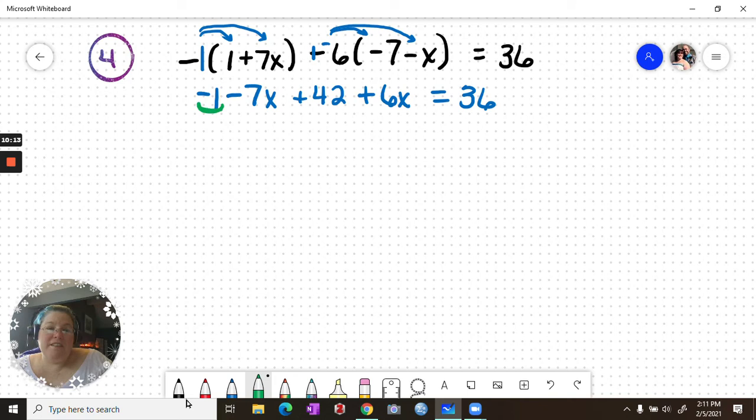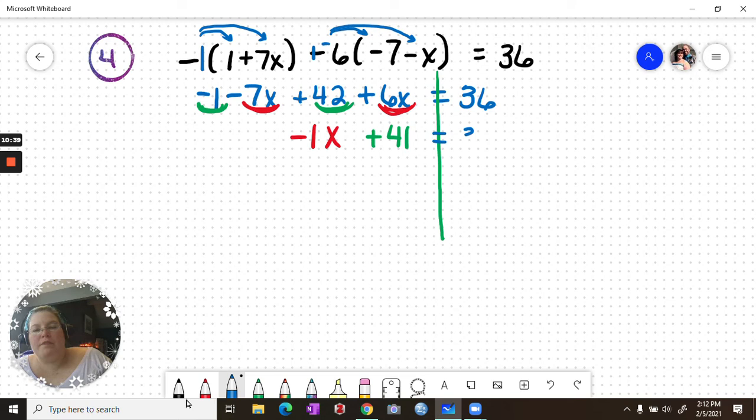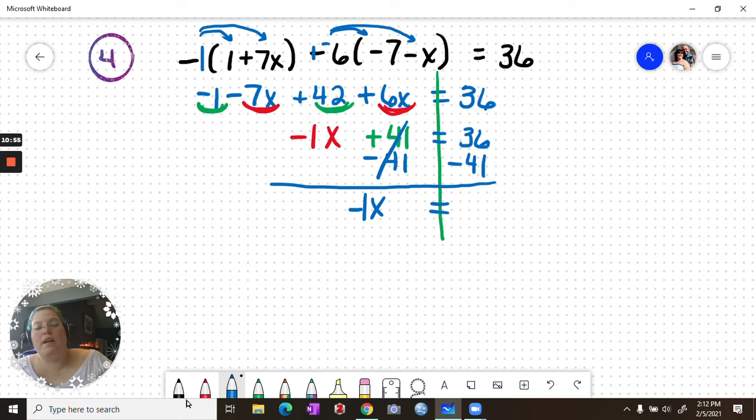Now we have some like terms. I have negative 1 and 42 on the left that I can combine, and that adds to 41. I have 6x and negative 7x, which gives me negative 1x equals 36. Now I need to work on isolating my x, so I am going to subtract 41 from both sides, and I get negative x equals, or negative 1x equals negative 5. To undo this negative, we can divide by negative 1 and we get x equals positive 5.